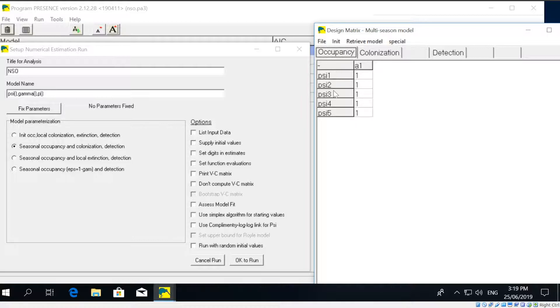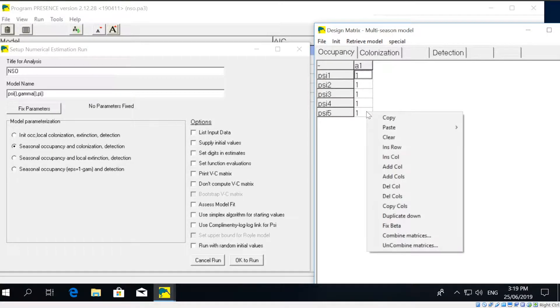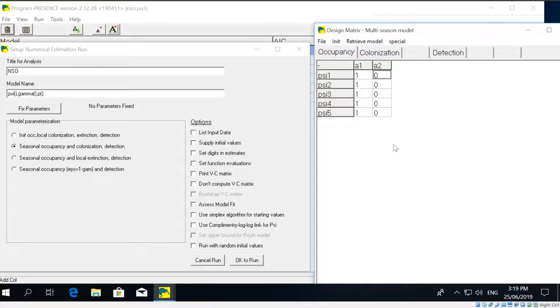Okay, so to fit a model where we have a trend in occupancy, it's rather straightforward. All we do is in the design matrix here for occupancy probability, we have a column of ones in the first column, and then the second column we just insert the values 0, 1, 2, 3, and 4.